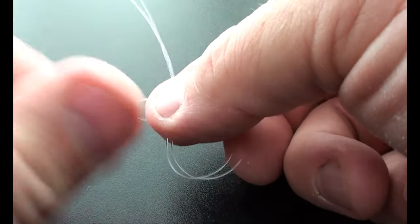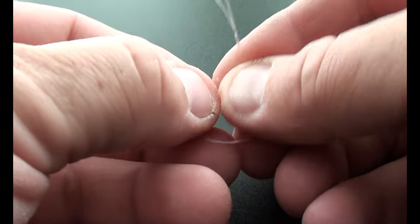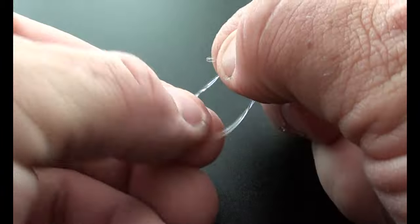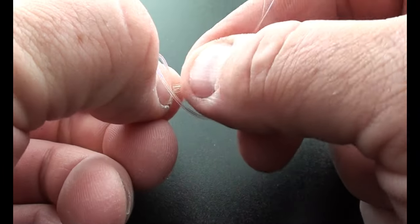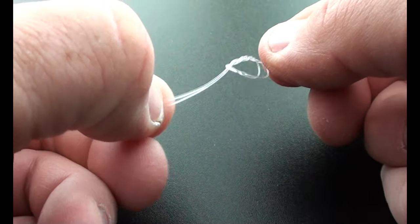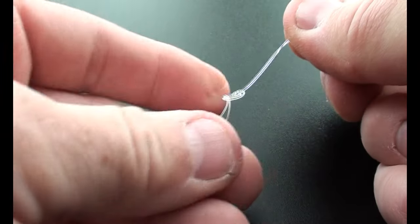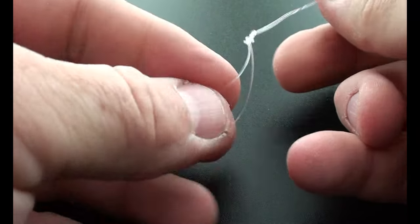To make a loop, I simply use a simple double overhand knot. So I make a loop in the line itself and then basically tie a double overhand knot. This works really well. It's really quick. It allows you to make up these harnesses really fast. It doesn't slip.